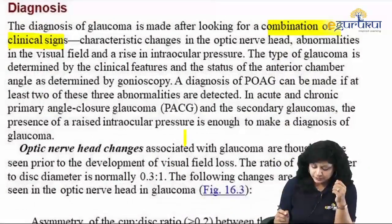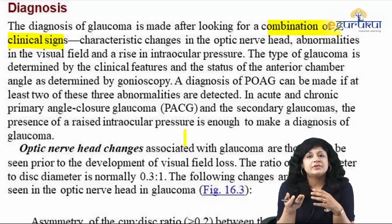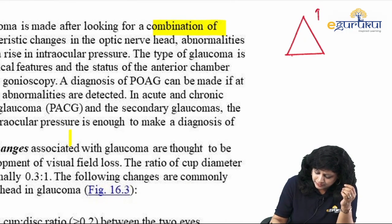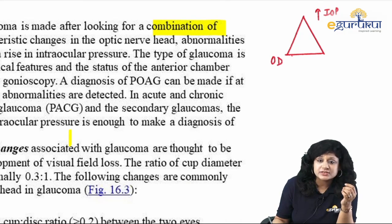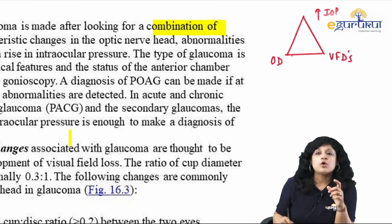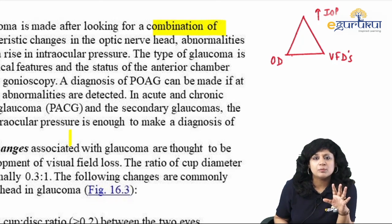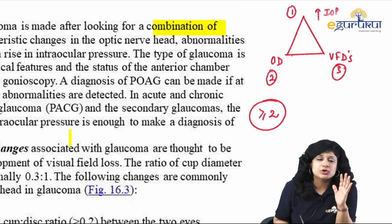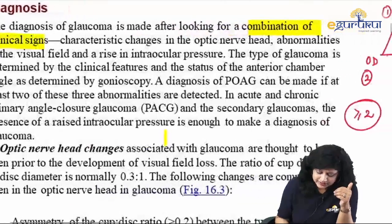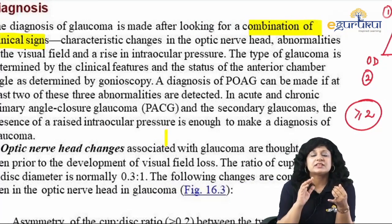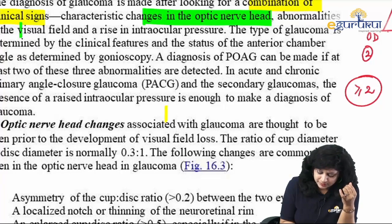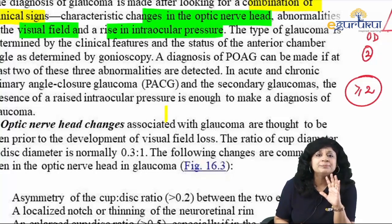In glaucoma, to make a diagnosis we require a triad: raised intraocular pressure, optic disc changes, and visual field defects. If we have these three things, it is glaucoma — but at least two criteria are required. There should be a certain combination of clinical changes: changes in the optic nerve head, abnormalities in the visual field, and rise in intraocular pressure. This is the simple triad.